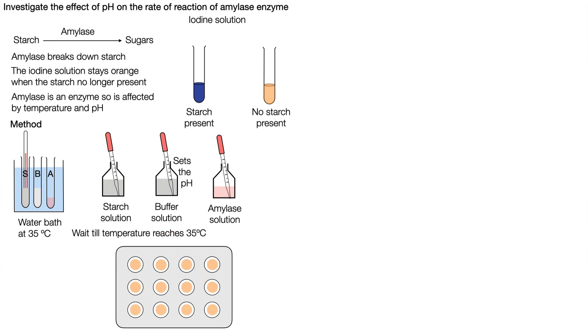So once our temperature has reached 35 degrees Celsius for our starch solution we can begin. The first thing we do is to mix the buffer and the amylase and the starch so they all go into the starch test tube.